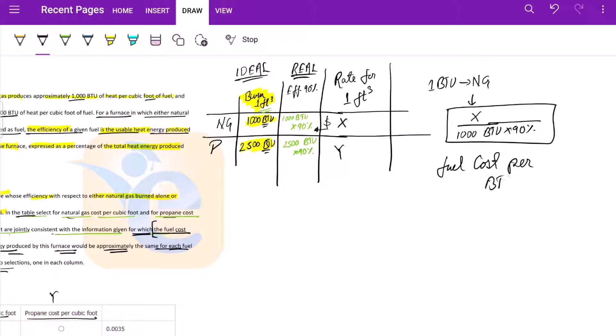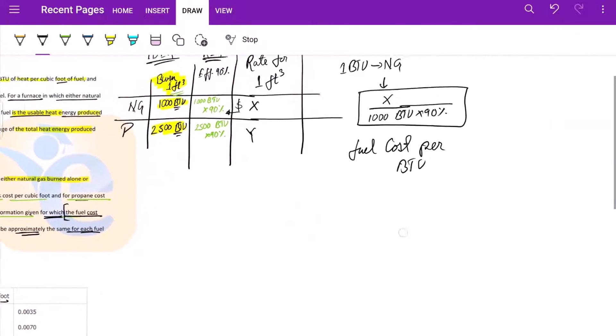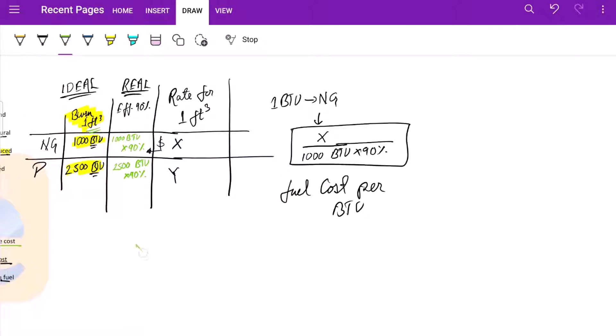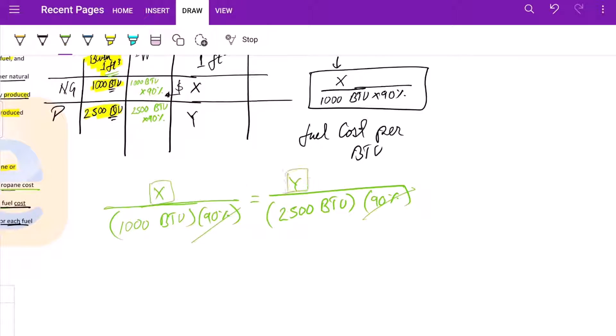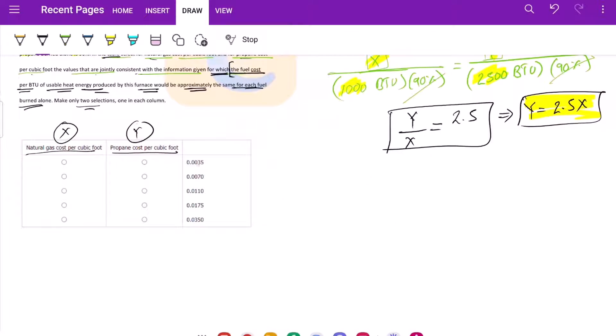And we need to find the value of x and y for which this becomes same for both. So basically our equation is x divided by 1000 BTU times 90%, which should equal y divided by 2500 BTU times 90%. So as you can see, we can easily eliminate 90% from both sides. If you simplify it, it comes out to be y/x equals 2.5, which also implies that y is 2.5 times x.